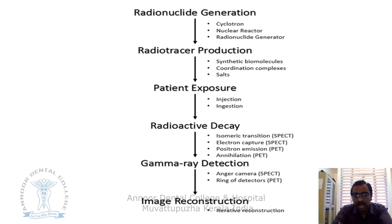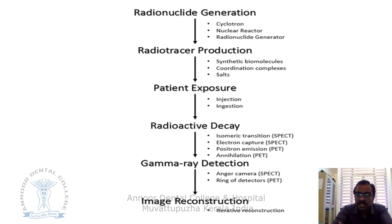Radioactive decay occurs by electron capture, positron emission, or annihilation. Gamma ray detection is performed using a scintillation camera or a ring of detectors. Image reconstruction is then done by computer.